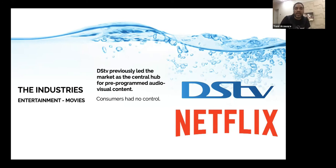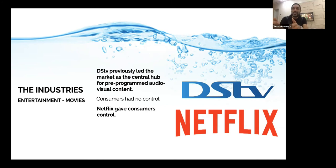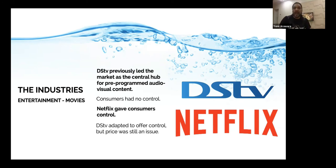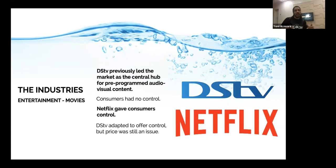Consumers had no control. Then what happened? Netflix came on board and gave consumers what DStv could not give at that time — control. Consumers could actually choose what they wanted to watch at any point in time, and people began to gravitate towards Netflix. So what happened? DStv pivoted as well and adapted to offer control. They came out with PVR decoders and the Explorers — with those decoders you could pause, rewind, record, watch catch-up, or even rent movies on the box office.